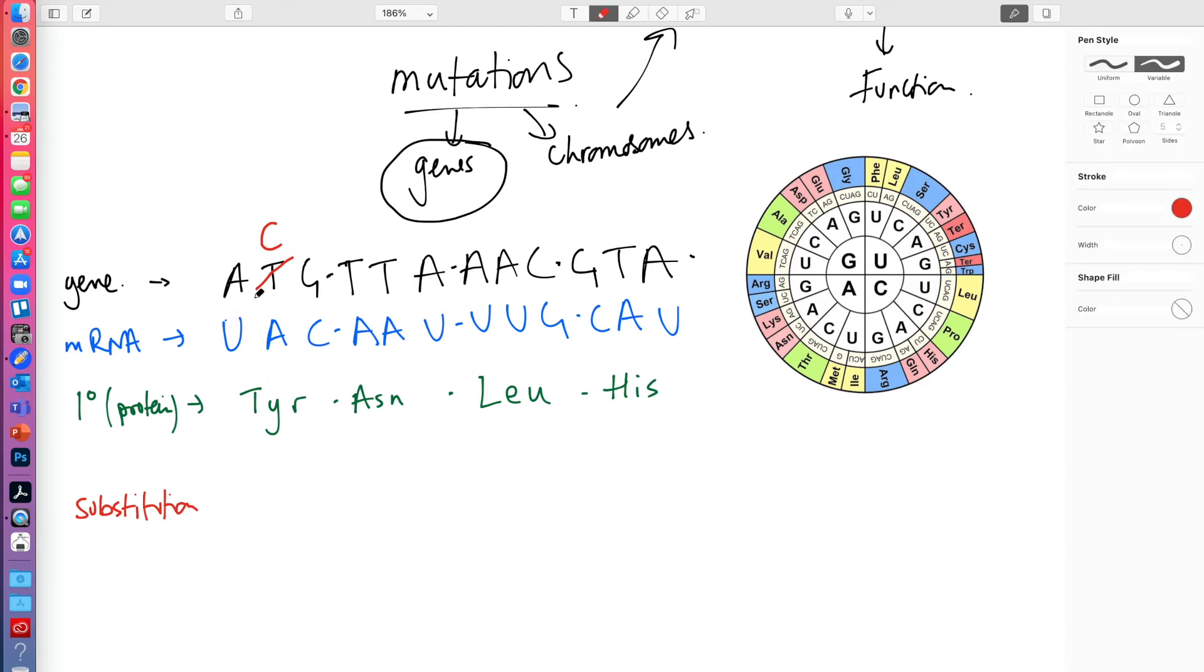So what happens then? So let's see how that would impact. So when translation happens then, instead of that A being put into place, the RNA polymerase would see that C and put a G in that position. Now if UGC is that codon, then when translation happens, instead of the tRNA, the ribosome reading UAC as the first codon, it would read UGC. So UGC gives us cysteine. So instead of tyrosine, we would have cysteine.